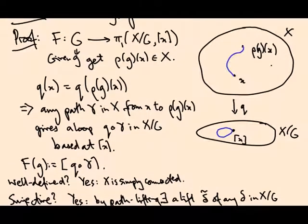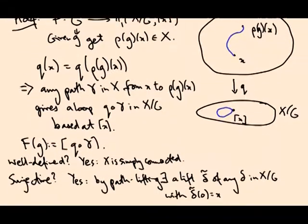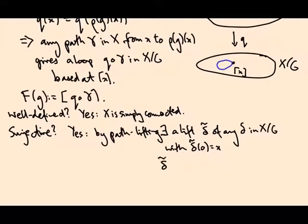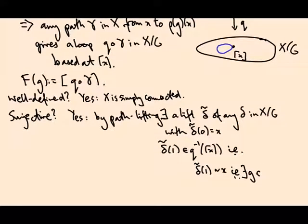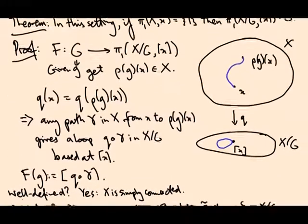So by path lifting there exists a lift δ̃ of any loop δ in X over G. δ̃ of 0 equals x. And what I want is to extract an element of the group. So δ̃ of 1 is in q inverse of the equivalence class of x, in other words it's equivalent to x, in other words it's in the same group orbit as x. So there exists a g in G such that ρ(g) of x equals δ̃ of 1. So this gives me surjectivity.